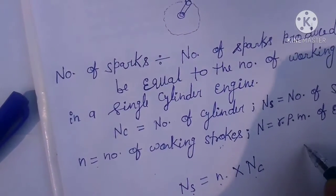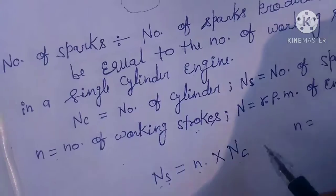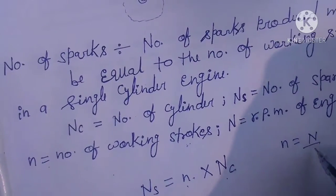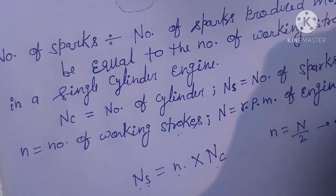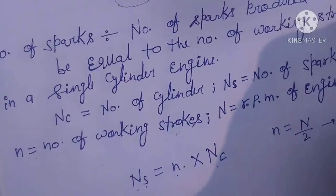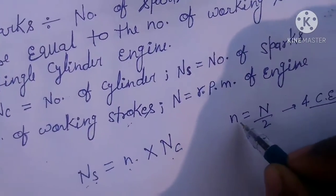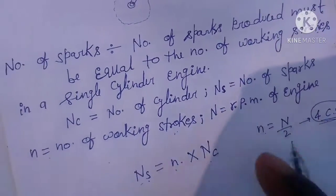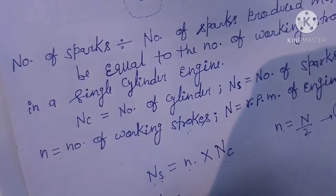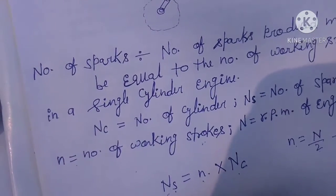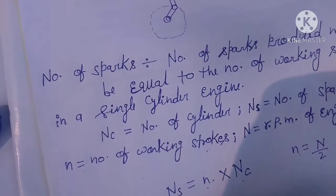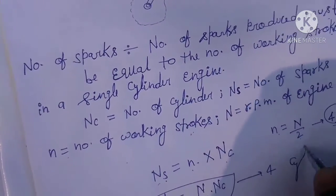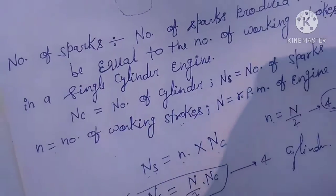For a four-stroke engine, the number of working strokes equals small n equals capital N divided by 2. So the formula becomes: number of sparks ns equals (N/2) multiplied by nc, for a four-stroke engine.